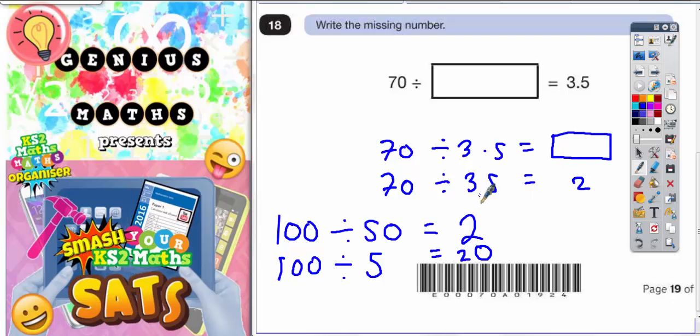But if I put the decimal point back in, and then from 35 to make it 3.5, I'm dividing by something that's 10 times smaller. So there's going to be 10 times more of those 3.5 in 70. So if there's two 35s, there's going to be 10 times more, which would be 20 lots of 3.5 in there.